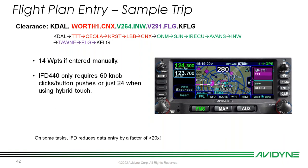Flight plan entry is really simple with the IFDs. Loading a complex flight plan into a legacy navigator requires potentially hundreds of button pushes and knob turns. With the IFD using buttons only, the same flight plan can be done in about 60 clicks; using hybrid touch, it can be entered with just 24 total interactions — taps, knob clicks, or button presses. That significantly reduces workload and speeds up entry and changes on the fly.